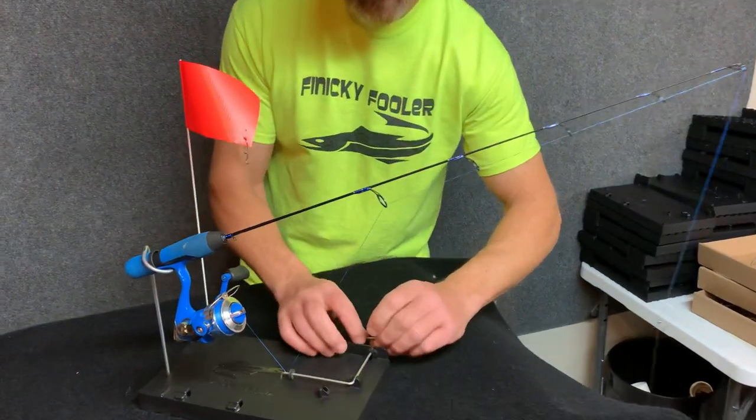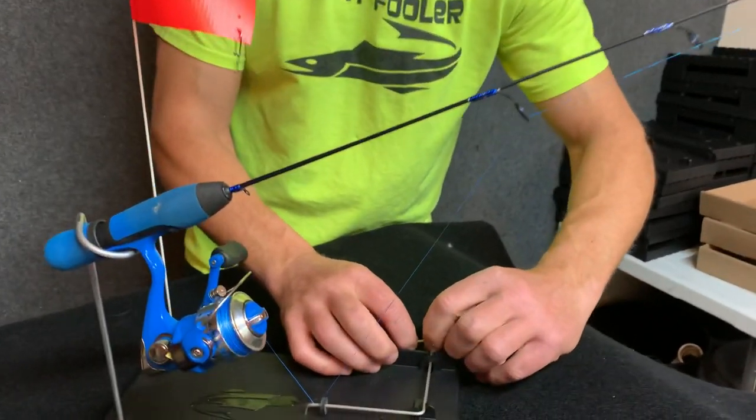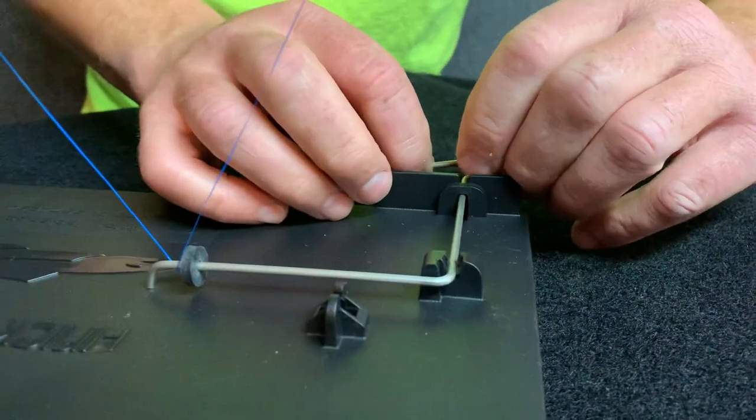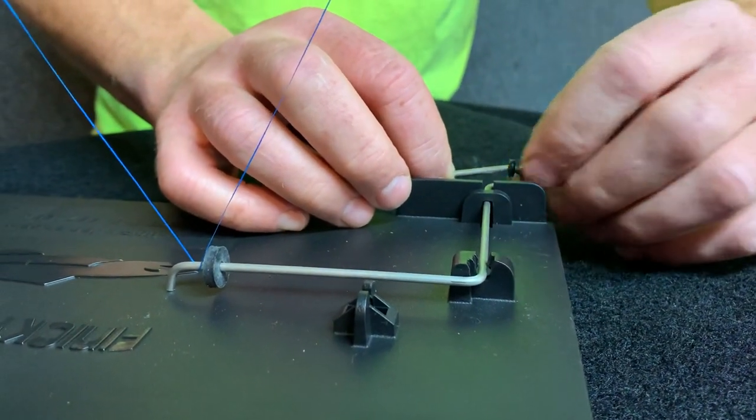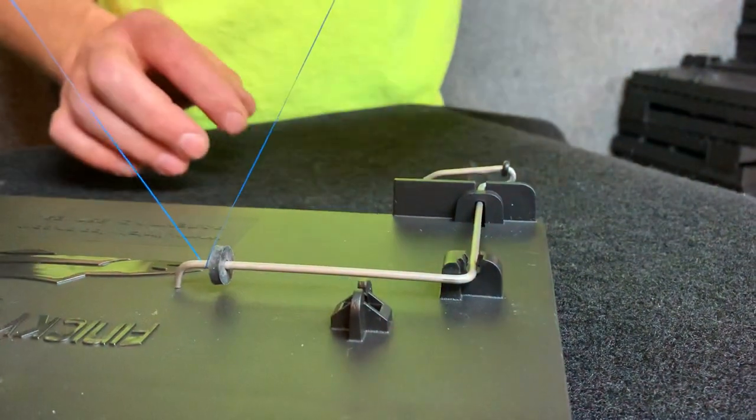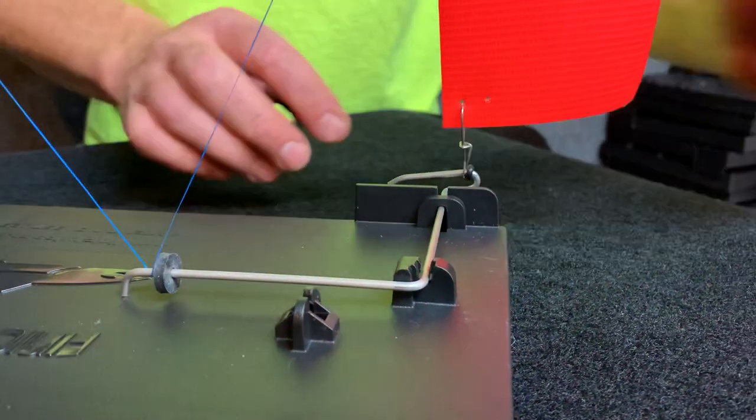Again, the line just goes under there. If you want to set it up for bigger minnow, say you're fishing pike, just dial this forward. I found it easy just to spin this, and it moves a little easier forward, and then you can get more tension on there.